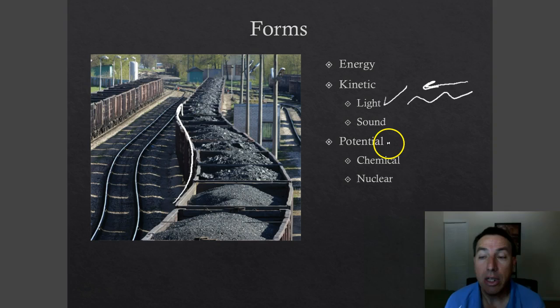Potential energy is the energy of position. Depending on how the object is placed, it has the potential to move. If this train track is on a hill and the brakes are applied and the train is not moving, it has a potential to move because it's on a hill. Once the brakes are released, the train will start moving.